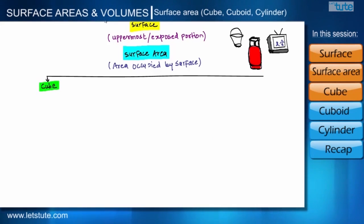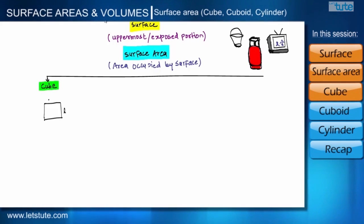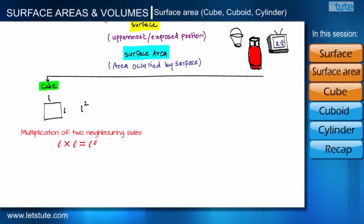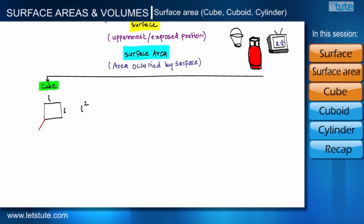Let us start with the cube. First of all, we will see what shape we call a cube. As we all know, the area of a square with side L is L squared. Now suppose we want to make a box using such square sheets having area L squared — this is our base which has four sides.